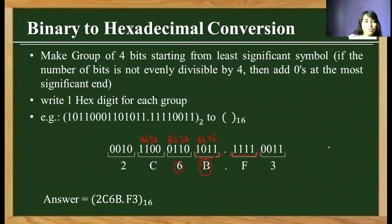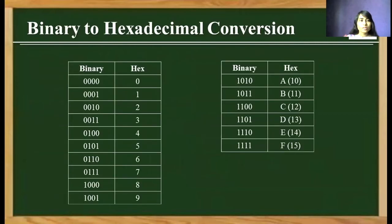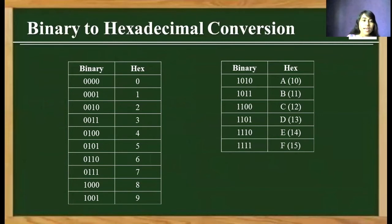A table is shown where 4 bits of binary is equivalent to 1 hex number. There are a total of 16 combinations from 0000 to 1111 and their equivalent hex numbers are represented in the table.